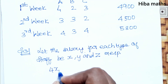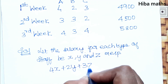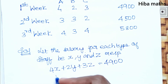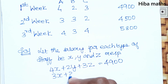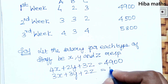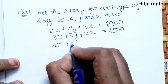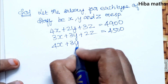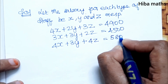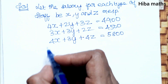4x + 2y + 3z = 4900. 3x + 3y + 2z = 4500. 4x + 3y + 4z = 5800. Matrix form: AX = B.